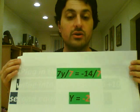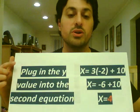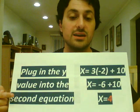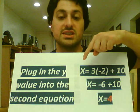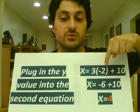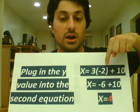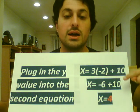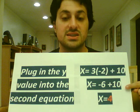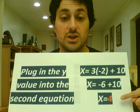That's the value of our y variable. Then we will plug in the y value into the second equation, which will give us x equals 3 times negative 2, which was the y value, plus 10. Or x equals negative 6 plus 10. Or x equals 4.